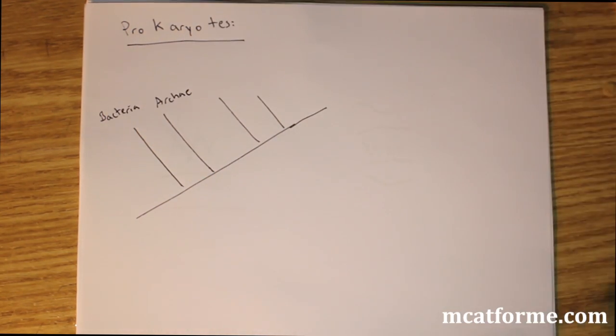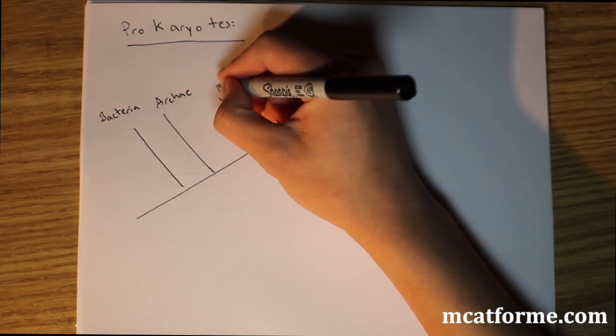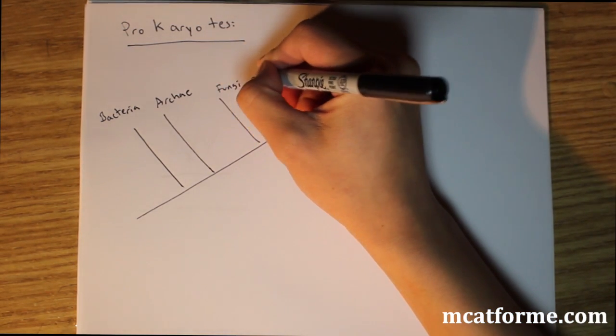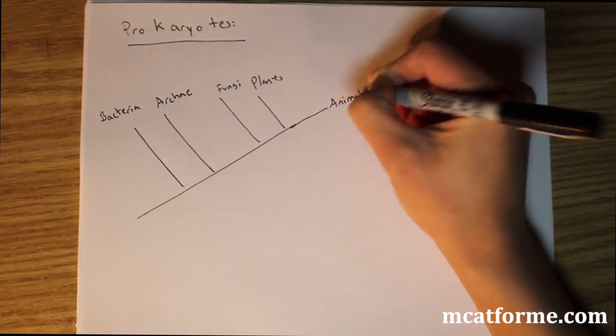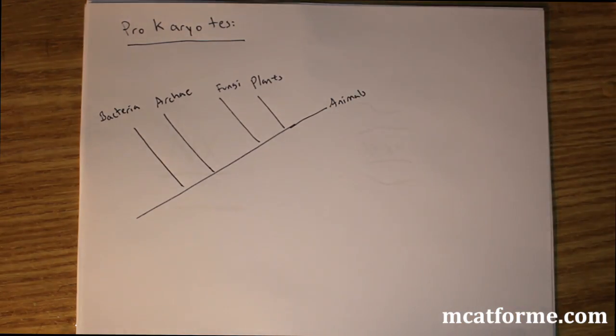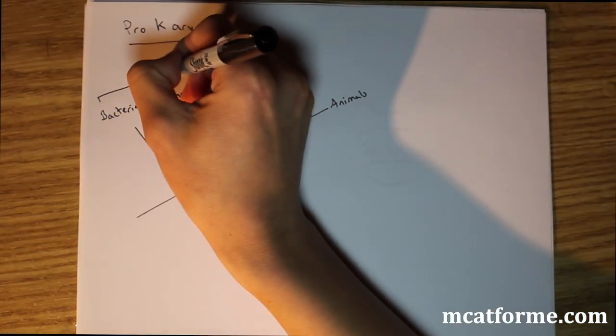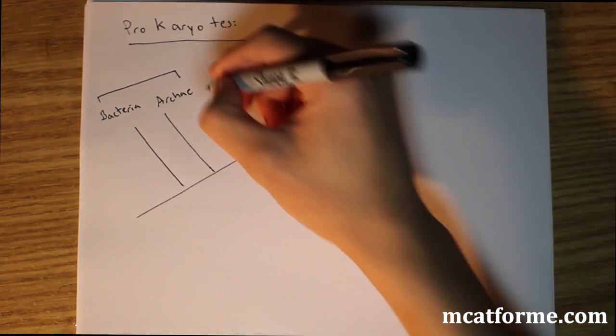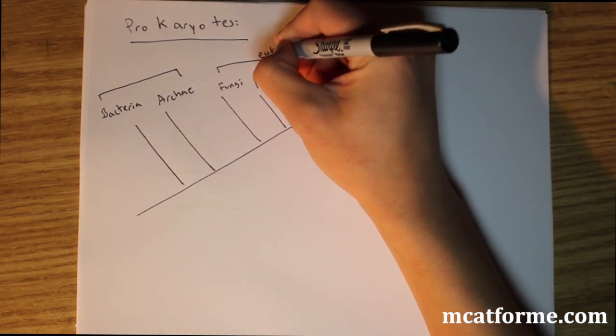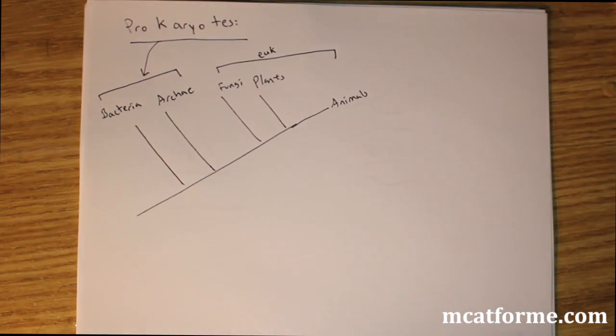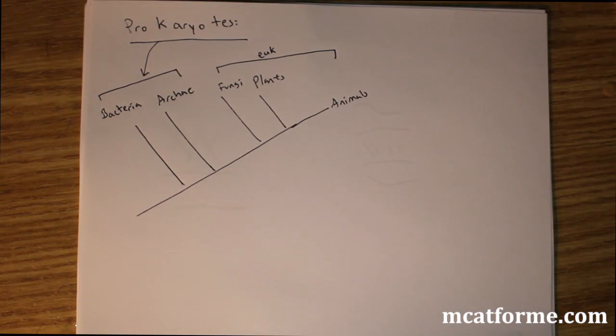So we have bacteria as the most ancient, archaea, then we have fungi, plants, and animals. Obviously I skipped the details, but pretty much these are your prokaryotes and these are your eukaryotes. So prokaryotes are bacteria and archaea together.